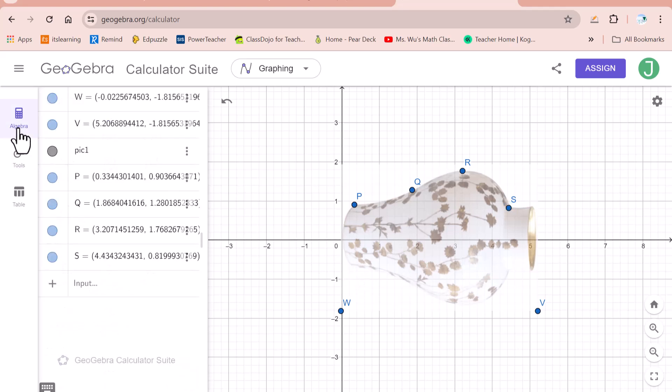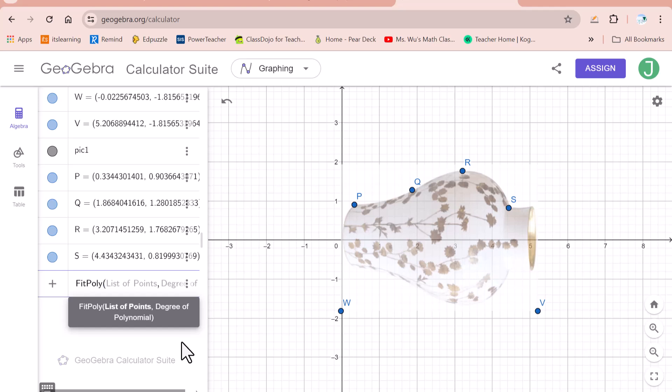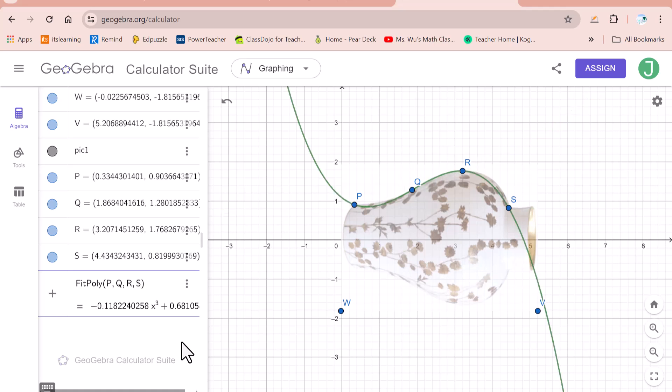Then click on this algebra. Type fitpoly. Click on fitpoly. List of points. Degree of polynomials. P, Q, R, S.